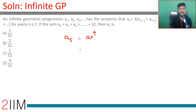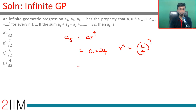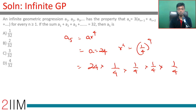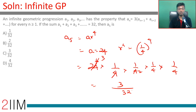a5 equals a times r to the power 4. With a equals 24 and r equals 1/4, this is 24 times (1/4)^4, which equals 24 divided by 256. Simplifying: 24 by 4 is 6, then 6 by 4 is 3/2, then 3/2 by 4 is 3/8, then 3/8 by 4 gives 3/32.